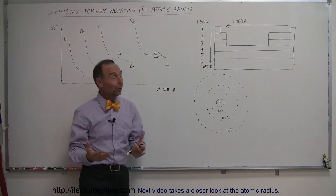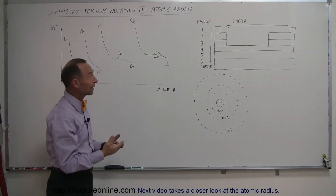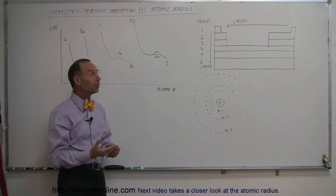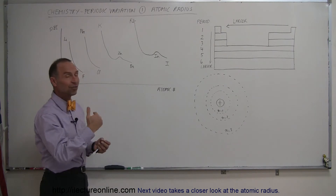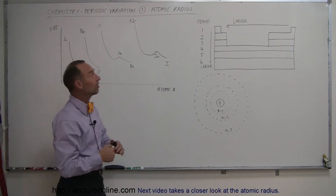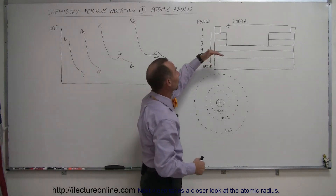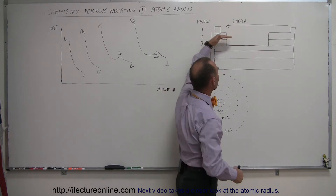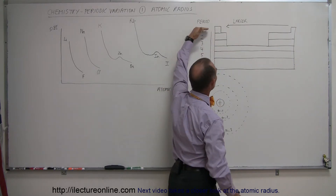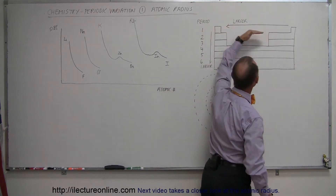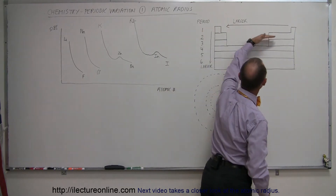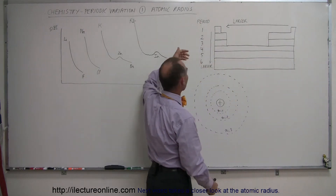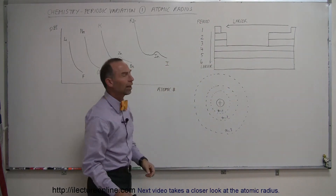There is a reason why we call the periodic table the periodic table. By looking at different periods — the different periods on the periodic table are basically the horizontal lines going across — so this would be period 1, period 2, period 3, period 4, and so forth as indicated to the left.